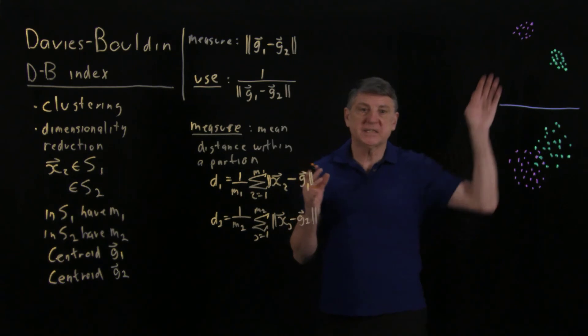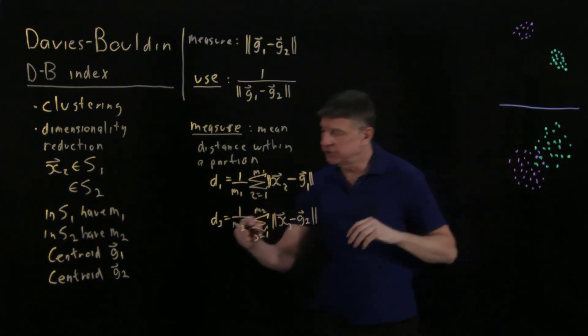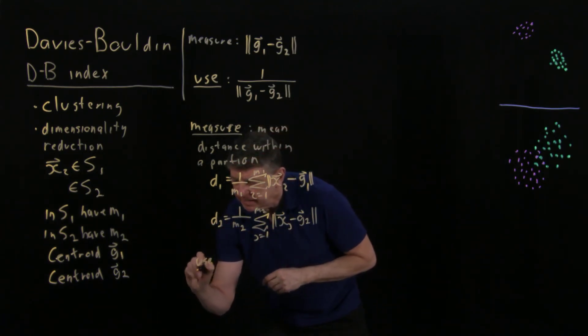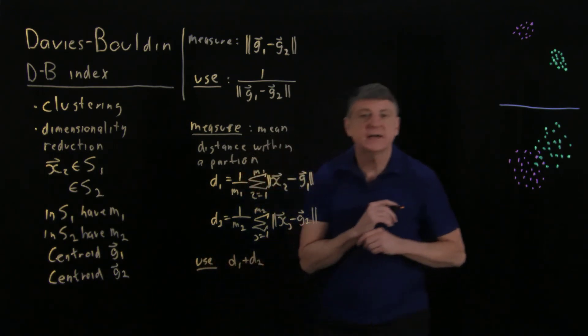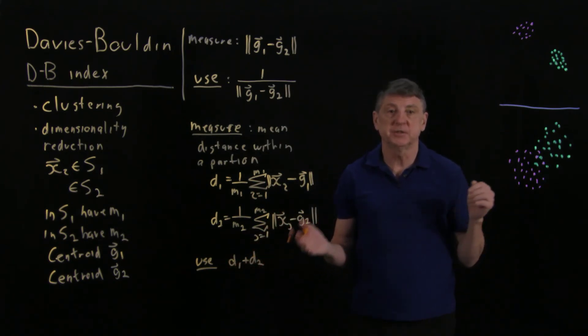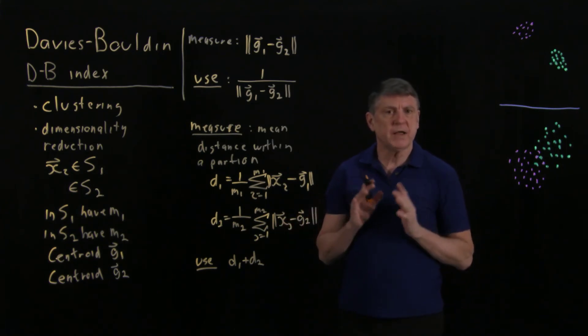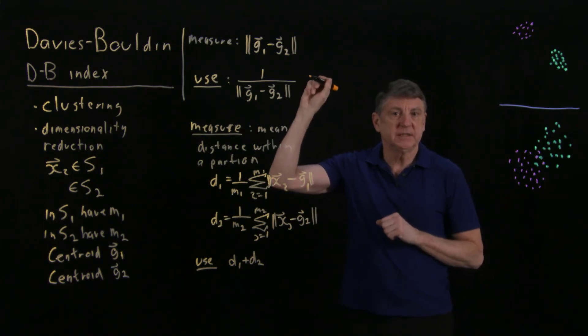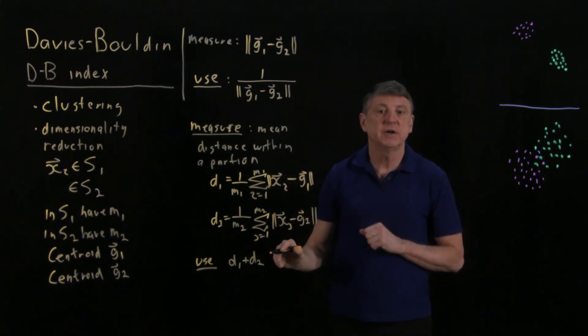So now I have these. Well, what would a tight cluster look like versus loose clusters? What I could do is I could say I could use d1 plus d2. That is, I could simply add up the dispersions of the two clusters and say that that's a measure. So now I have a slight problem. That is, I have one measure, which is the distance between the centroids or the inverse distance between the centroids. And then I have another measure, which is the sum of the dispersions.